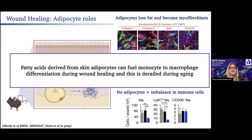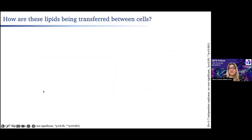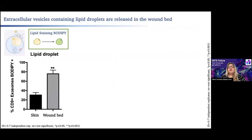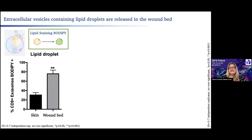In order to answer this, my first step was to check whether lipids are being transferred between cells. To our utter surprise, after six months trying to show that lipids were being released through canonical scavenging methods between adipocytes, we actually realized they were being delivered in the wound bed in the form of extracellular vesicles containing small lipid droplets.